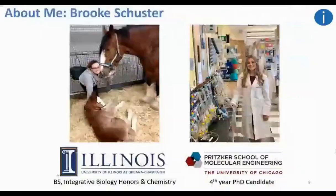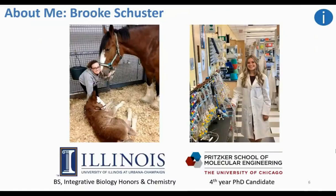A little bit about me: my name is Brooke Schuster. I was born and raised in the Chicago suburbs. I then attended the University of Illinois, Urbana-Champaign, in the more rural part of Illinois, right in the center of the state. I completed a Bachelor of Science in both Integrative Biology honors and Chemistry.